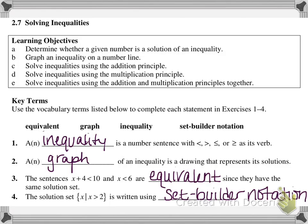A graph of an inequality is a drawing that represents its solutions. We tend to graph inequalities because there are actually infinite solutions. When you solve an equation, you get one, maybe two answers. But when you solve an inequality, there are infinite solutions. So if it's x is less than 6, there are infinite numbers less than 6, and we have a visual representation of that with a graph.